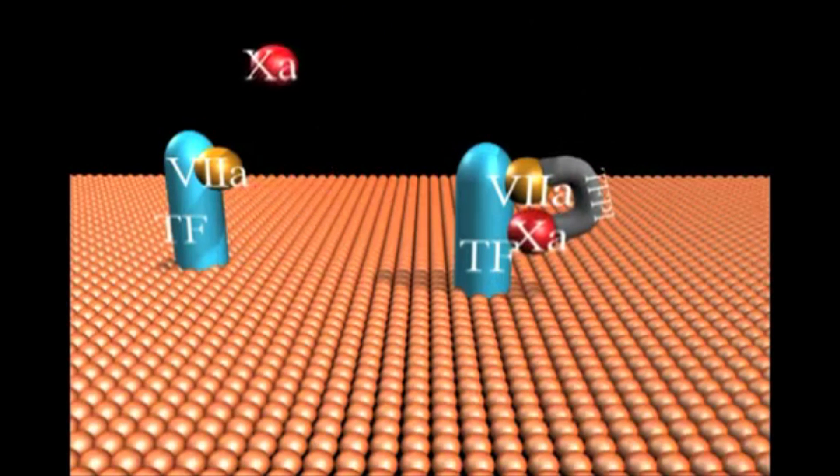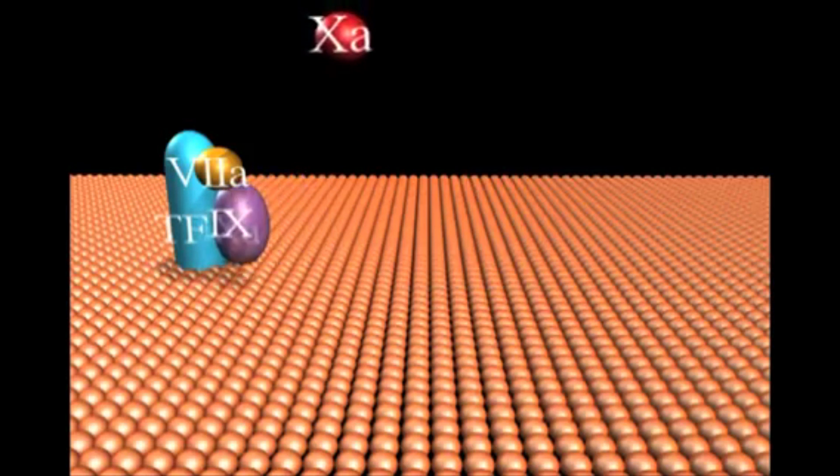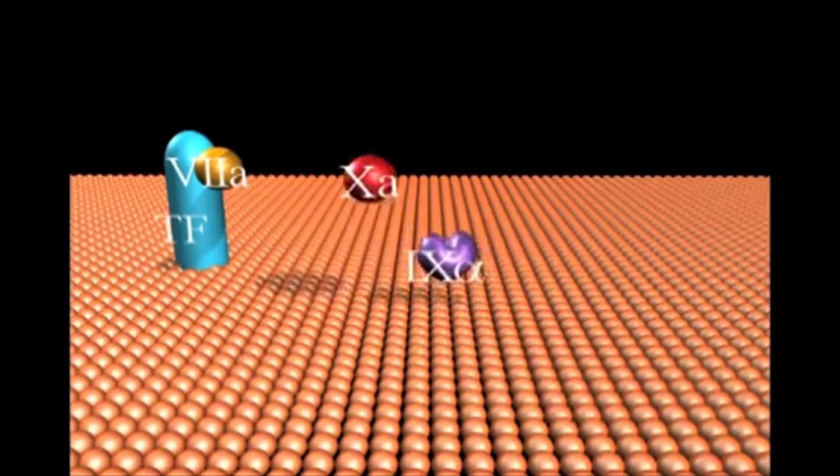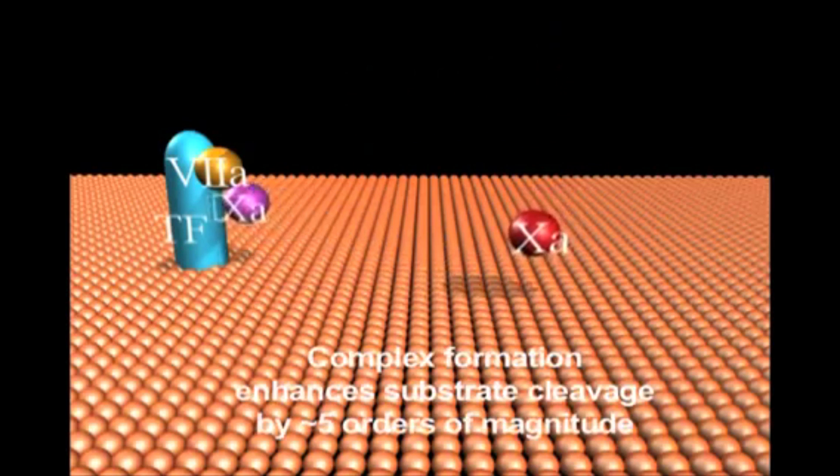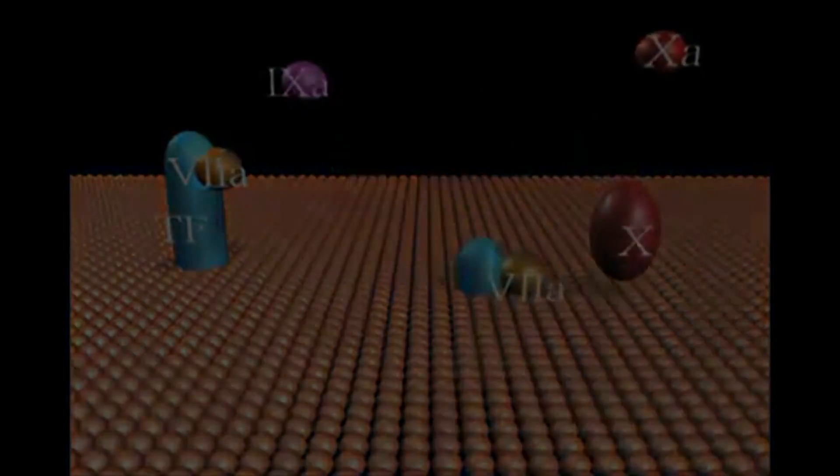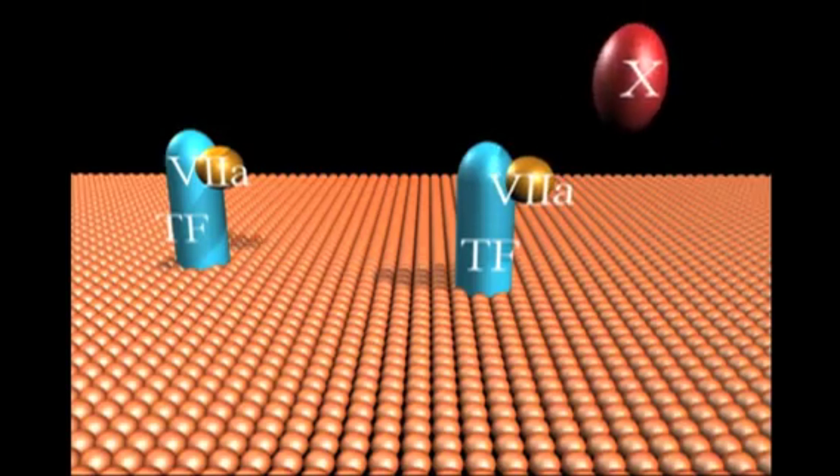The enhancement in the reaction rate which occurs with the complex of tissue factor factor 7a on a membrane when compared to plasma factor 7a toward both substrates is approximately five orders of magnitude. Prior to binding to tissue factor, plasma factor 7a is essentially inert from the catalytic perspective.